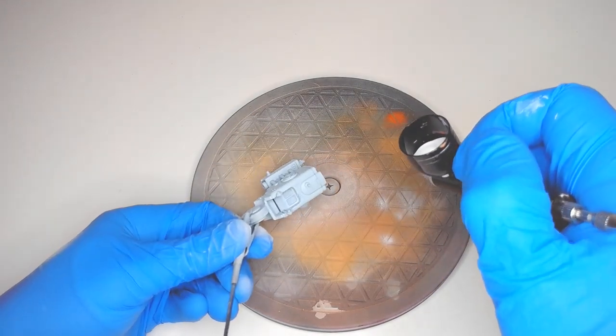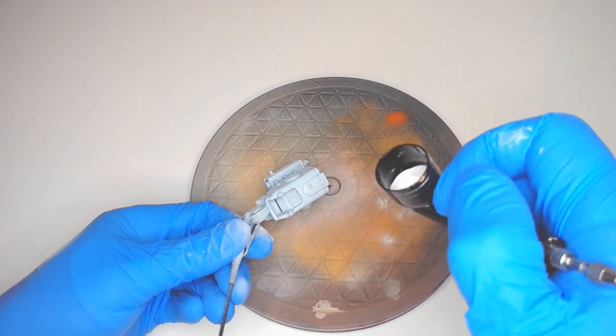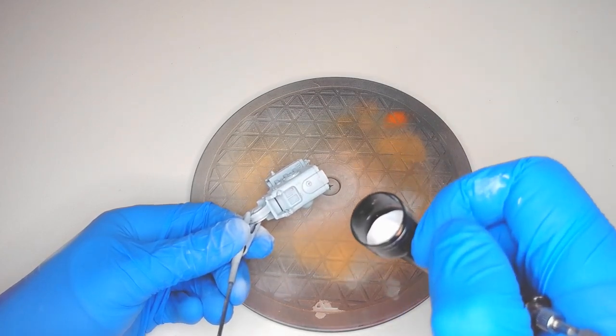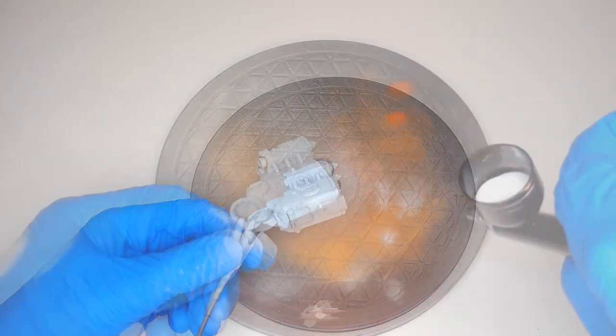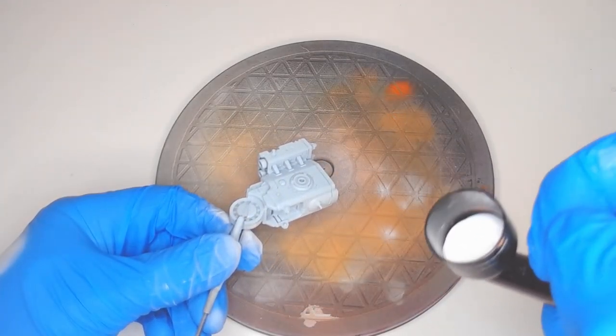One of my least favorite things about the original Storm Surge model was the way GW positioned the stubby missile pod arms. Thankfully, the aftermarket agreed and there are a few alternatives available.